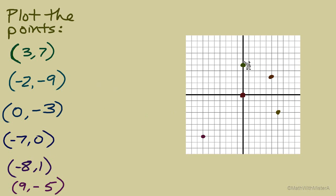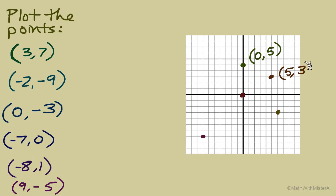Let's identify these points first. Starting at the origin for the first point — we don't go left or right, so the x-coordinate is 0. Vertically, we go up 1, 2, 3, 4, 5, so it is at the ordered pair (0, 5). For the next point, thinking horizontally first from the origin: to the right 1, 2, 3, 4, 5, so the x-coordinate is 5. Then up 1, 2, 3 — the point is (5, 3).